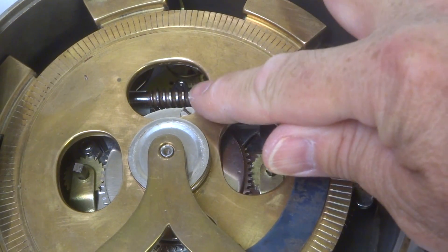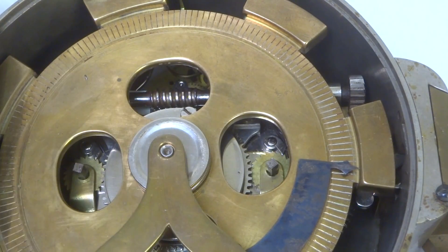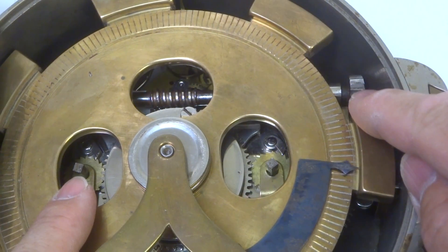This worm gear here continues to rotate, thus turning this wheel and allowing this to then slowly turn.